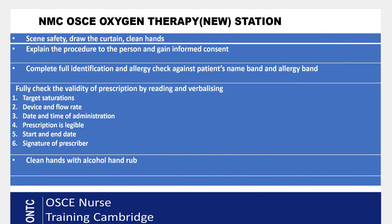As in any station, first do your scene safety, draw the curtains, and clean your hands using the World Health Organization seven-step guidance. Once done, explain fully to your patient what you are going to do and take valid consent. Then carry out the full identification check — hold the patient's hand, look at the name band, and ask the patient for their name and date of birth.